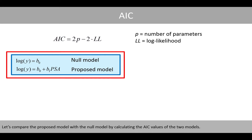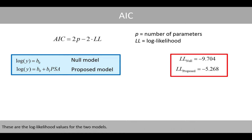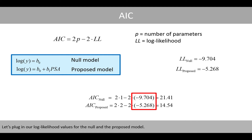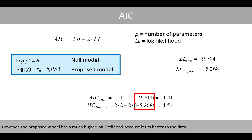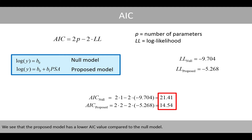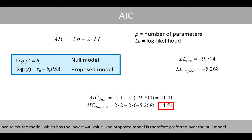Let's compare the proposed model with the null model by calculating the AIC value of the two models. Using the log likelihood values for the null and the proposed model, we plug in our values for both. Note that the proposed model gets a penalty because it has two estimated parameters, whereas the null model estimates only one parameter. However, the proposed model has a much higher log likelihood because it fits better to the data. We see that the proposed model has a lower AIC value, so the proposed model is preferred over the null model.